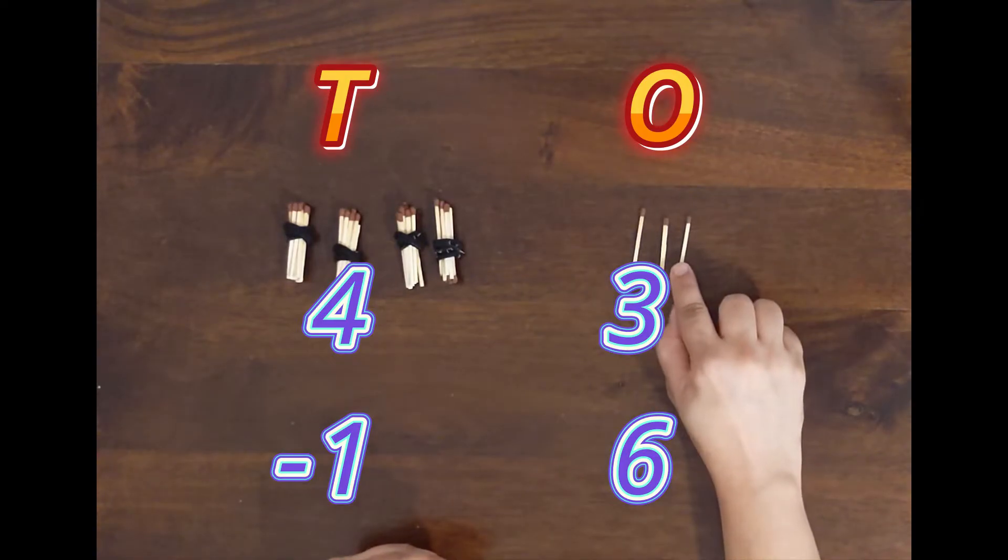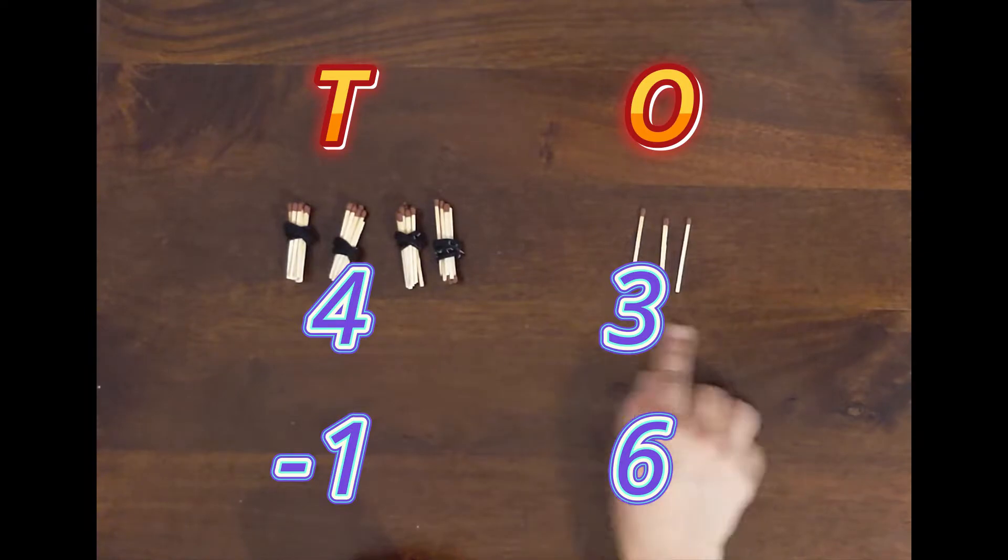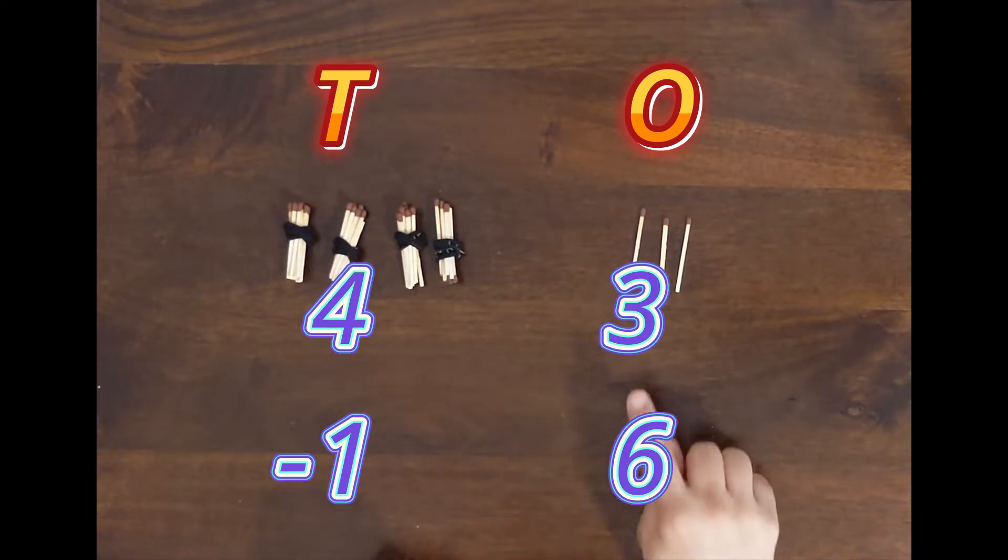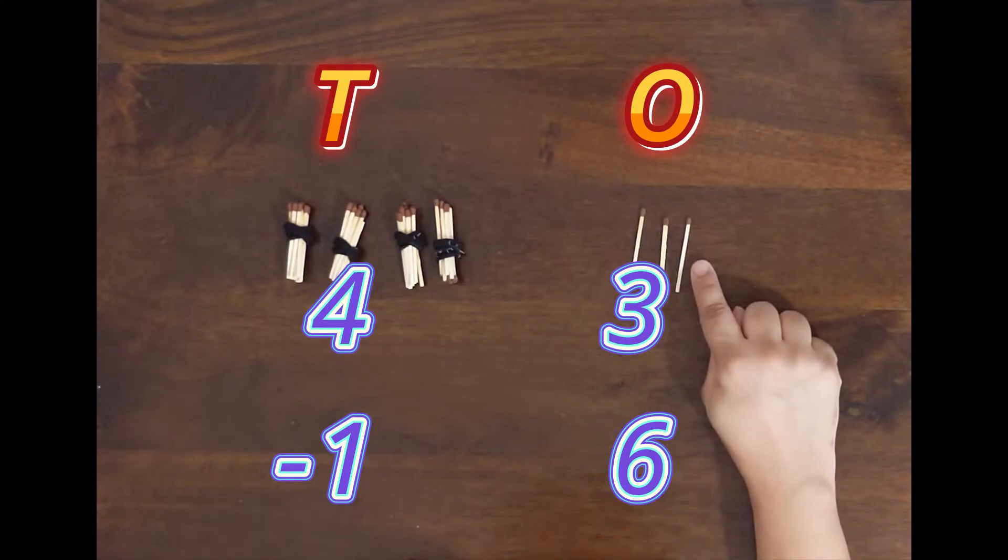So this completely represents 43. Now we have to do minus 16, so 6 is in the ones place. That means we have to take away 6 ones from 3 ones. But is it possible?